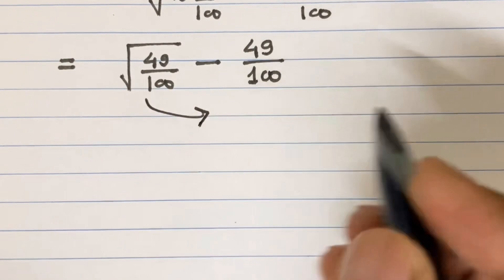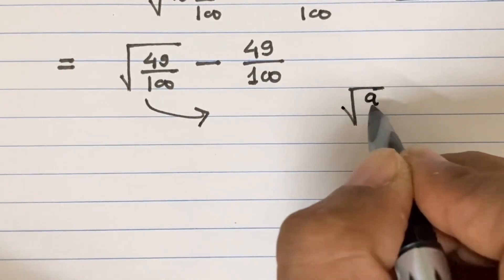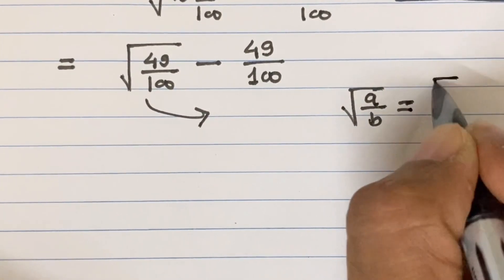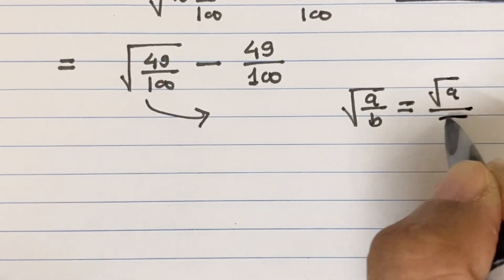So this is in the form of square root of a divided by b. This can be written as square root of a divided by square root of b.